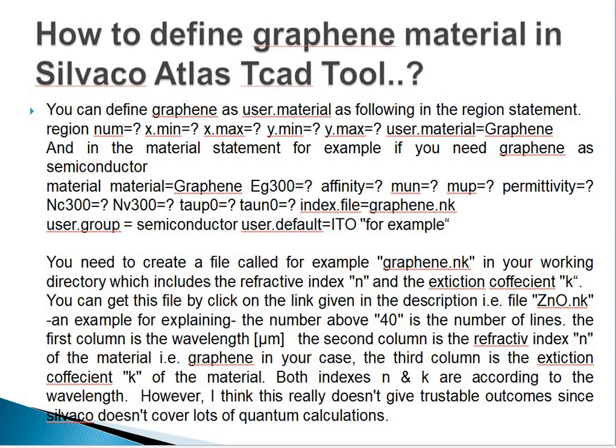And in the material statement, for example, if you need graphene as a semiconductor: material=graphene, with parameters including electron band gap, affinity, electron mobility, hole mobility, permittivity, density of states for conduction band as well as valence band, taup, taun, index.file=graphene.nk, user.group=semiconductor, user.default=ito. You need to create a file called graphene.nk in your working directory, which includes the refractive index n and the extinction coefficient k. You can get this file by clicking the link in the description — that is file 0.0.nk. The number above 40 refers to the number of lines. The first column is the wavelength. The second column is the refractive index n of the material, and the third column is the extinction coefficient k. Both n and k are given according to wavelength.